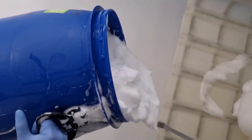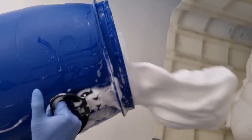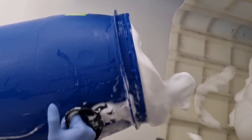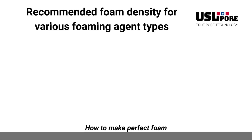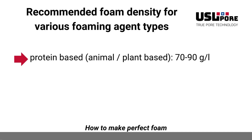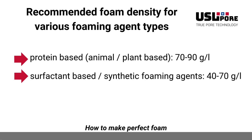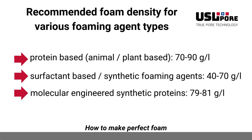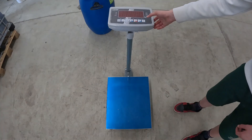Regarding foam density for foam concrete: even if drier foam looks more impressive, it isn't always suitable for foam concrete applications. Once low-density foam is added into a cementitious slurry of cement, water, and filler having a density between 1600 to 1800 grams per liter, the foam can't be embedded in the slurry properly. In practice, foam densities of around 70 to 90 g/L are recommended for protein-based foaming agents, and 40 to 70 g/L for surfactant-based agents. For USL POUR foaming agents, 79 to 81 g/L is recommended. An accurate and constant foam density is essential to produce consistent foam concrete, as undefined manufacturing processes lead to inconsistent fresh density batch over batch.